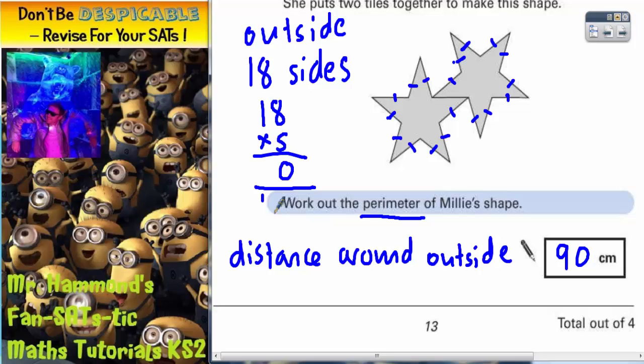5 times 8 is 40. 5 times 1 is 5. Plus the 4 is 9, which still gives us our 90 centimeters. Whichever way you do it, the final answer is 90.